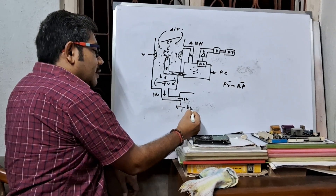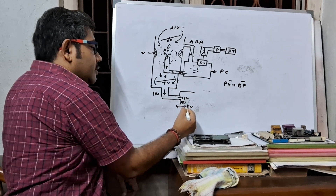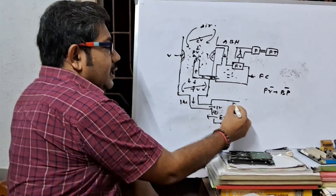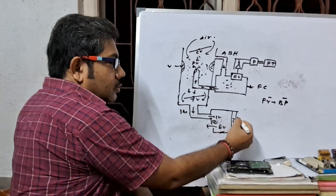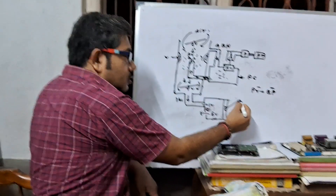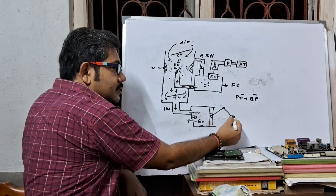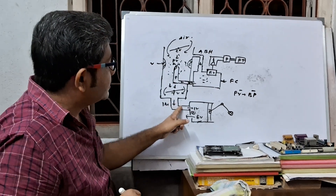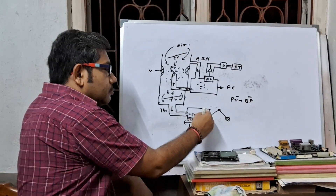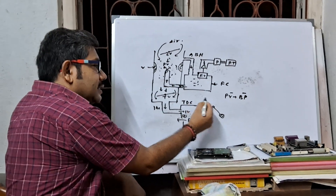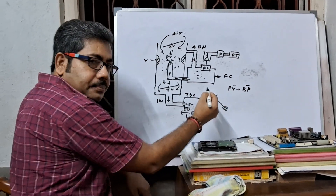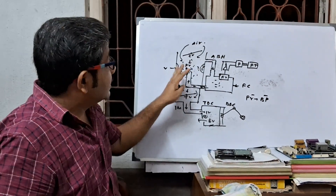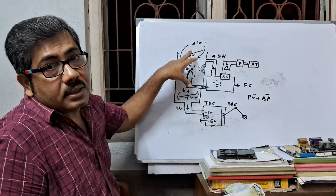The air-petrol mixture passes through the induction manifold and comes into the cylinder through the inlet valve. This is the exhaust valve; this is the carburetor; and this is the cylinder with the piston, piston rod, and crank. When the air-petrol mixture enters the cylinder, the piston moves from TDC to BDC — and in this way, the air-petrol mixture is prepared by the carburetor.